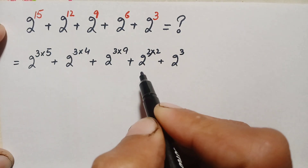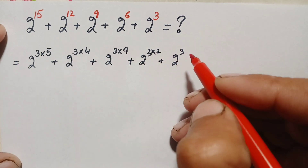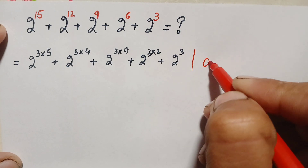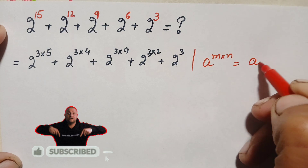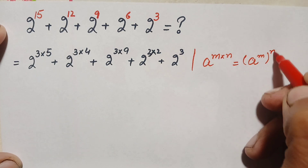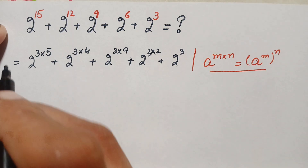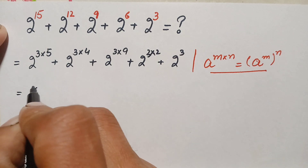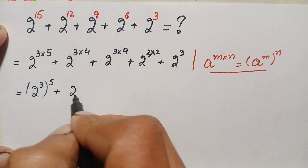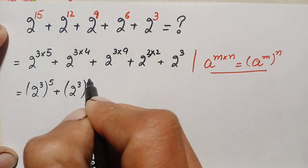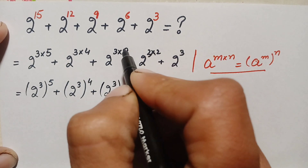Now in these terms we will use an exponential identity: a raised to power m times n can also be written as a raised to power m, whole raised to power n. Using this identity, we can rewrite the equation as 2 raised to power 3, whole raised to power 5, plus 2 raised to power 3, whole raised to power 4, plus 2 raised to power 3, whole raised to power 3.